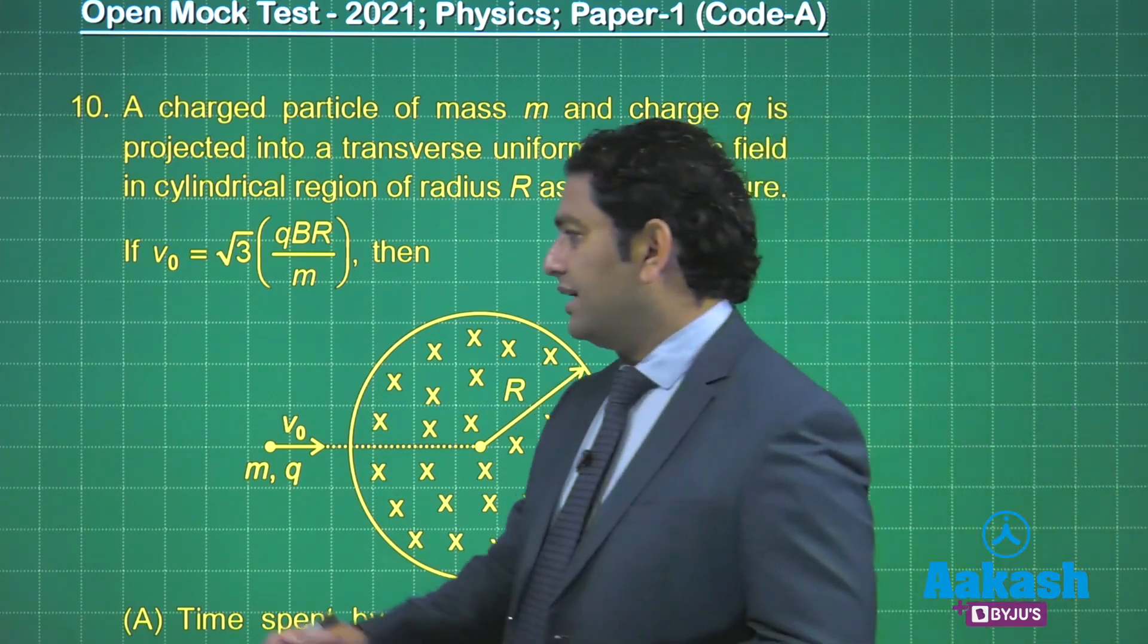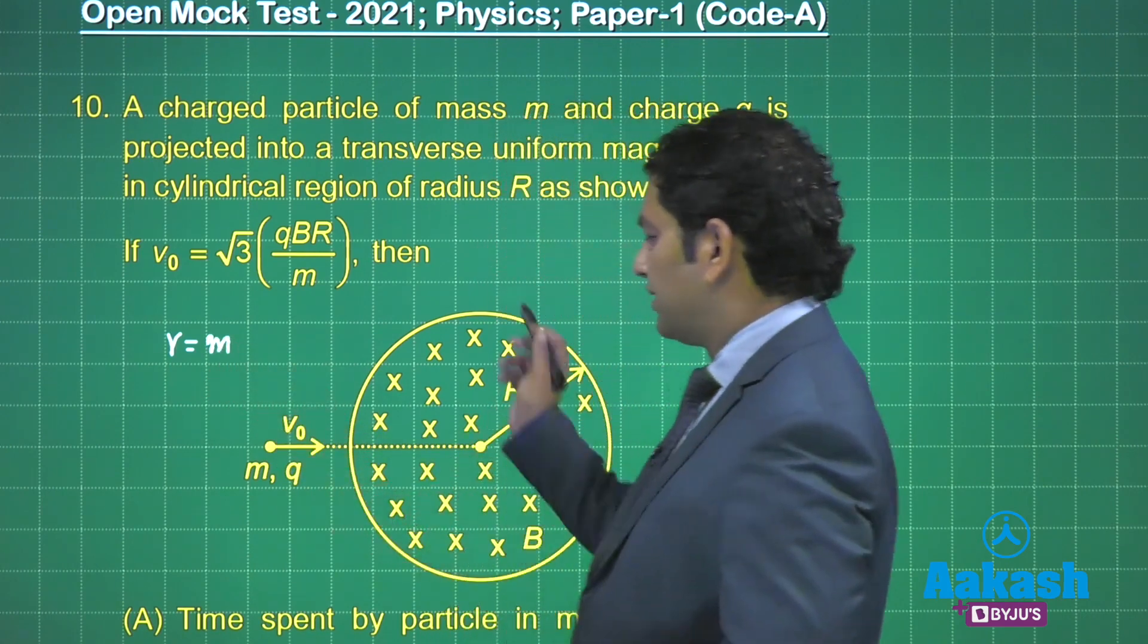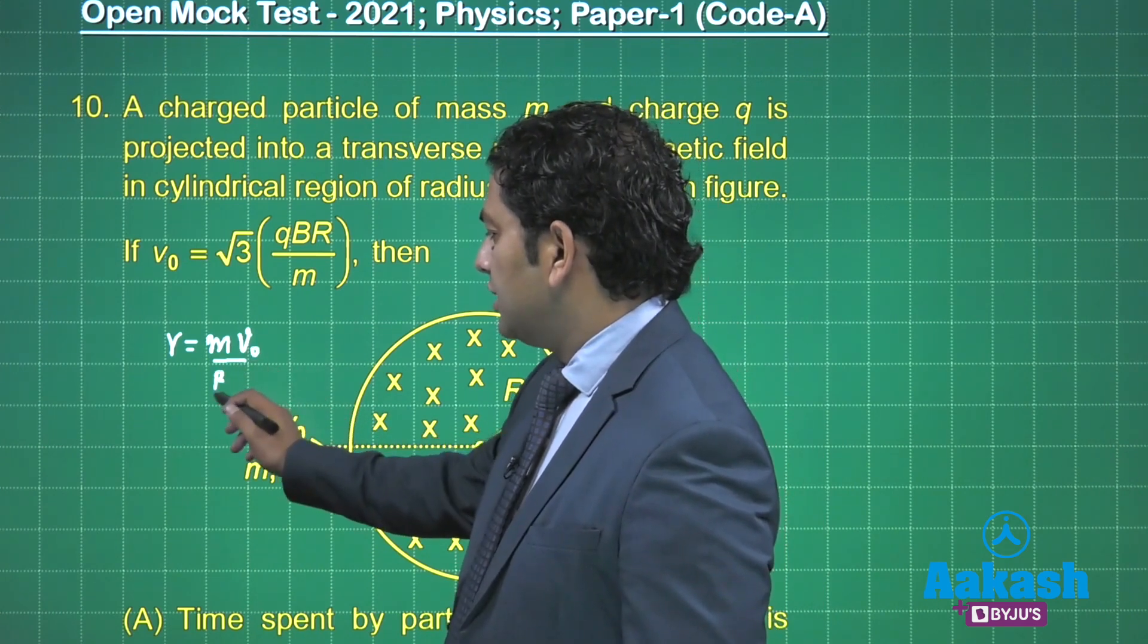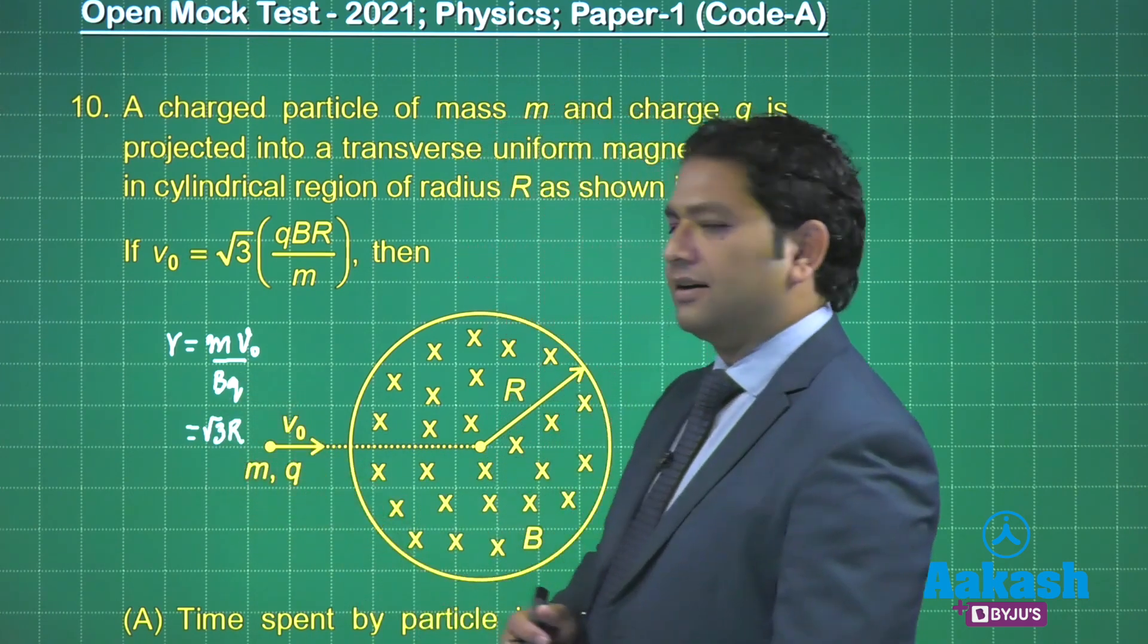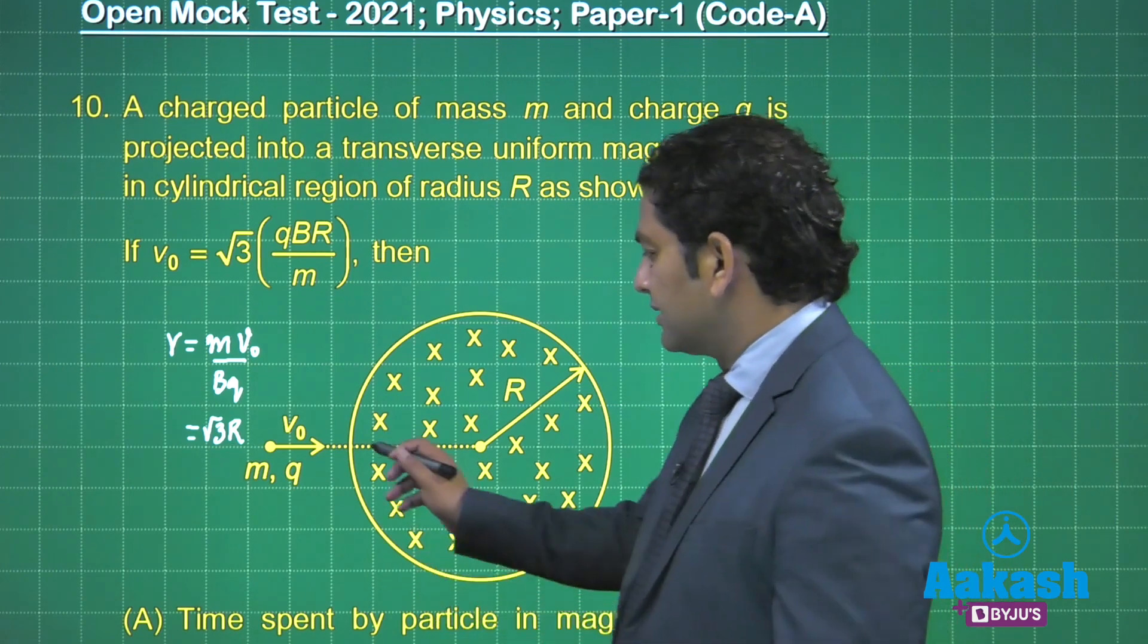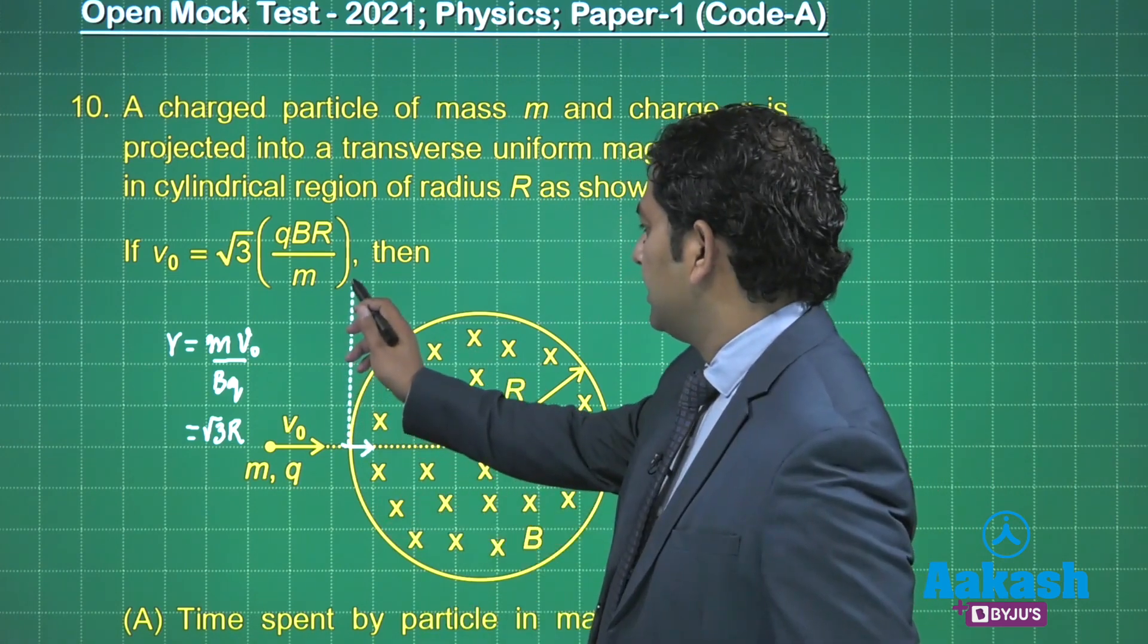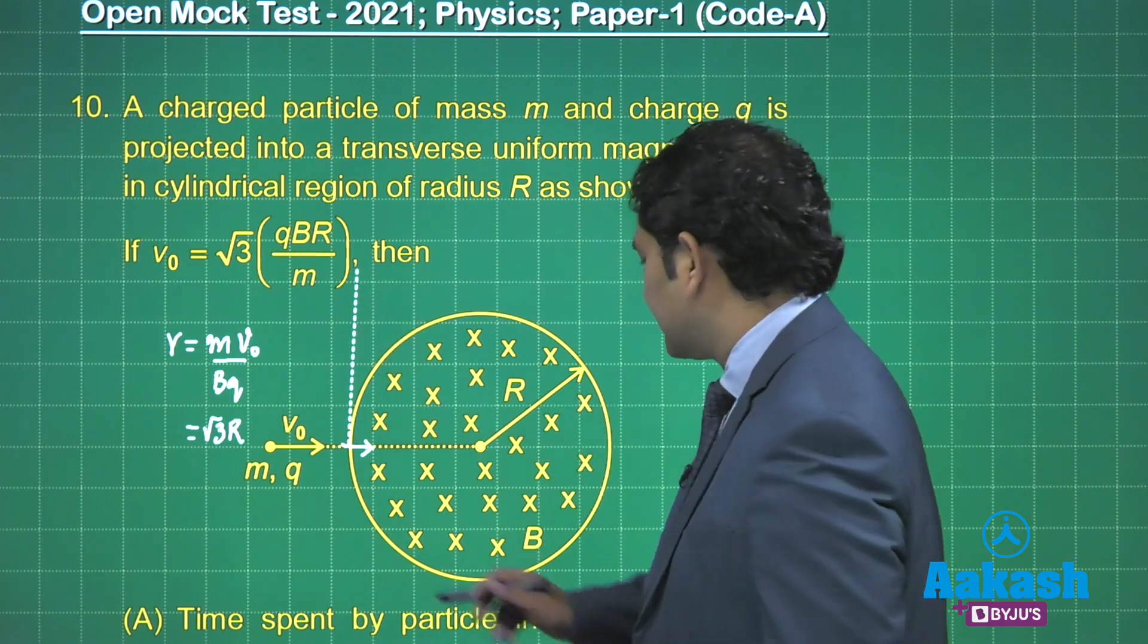But then we need to calculate that radius. So the expression of the radius - please do not confuse with this radius - the radius of that path is mv₀ by Bq. So clearly that radius comes out to be root 3 times capital R. It means things are not going to be so simple. Here it enters and the direction of the center is going to be upward and that distance is root 3 times R.